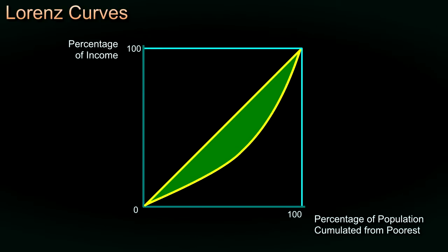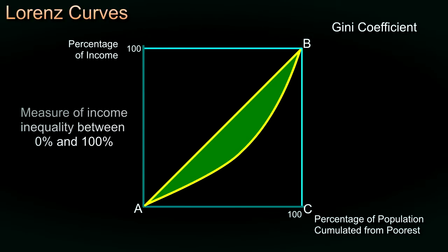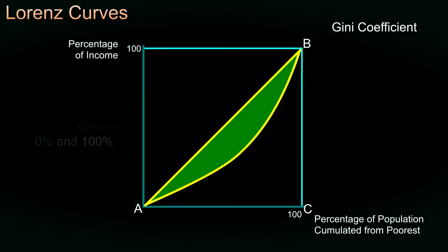Indeed, we can measure the shaded area as a proportion of the triangle ABC to give us a measure of inequality that will be between 0 — where everyone has the same income — and 100%, where you might think of having one person with all the income and the rest of the population having nothing. This measure is called a Gini coefficient, given by the shaded area as a proportion of the triangle ABC, and will be somewhere between 0 and 100.